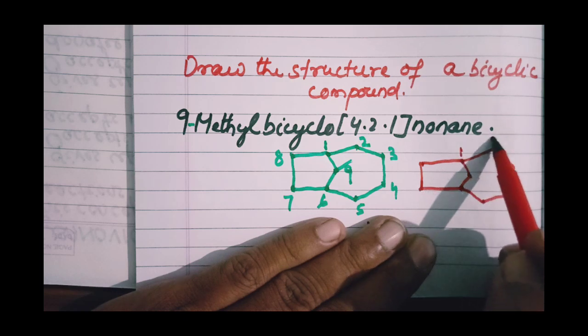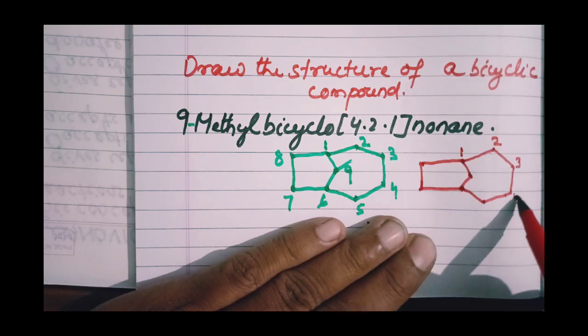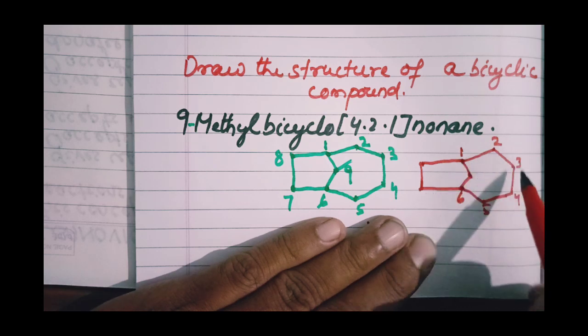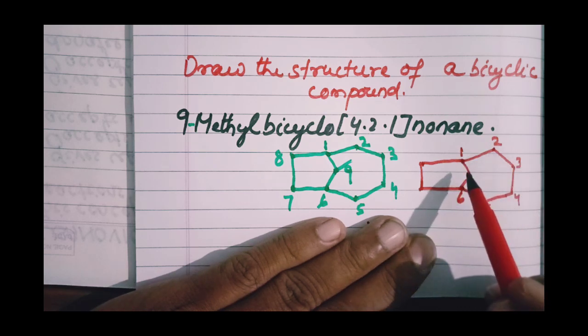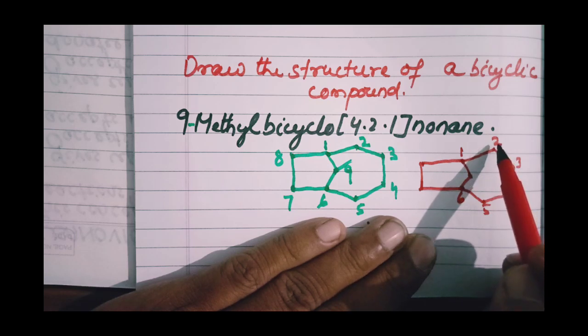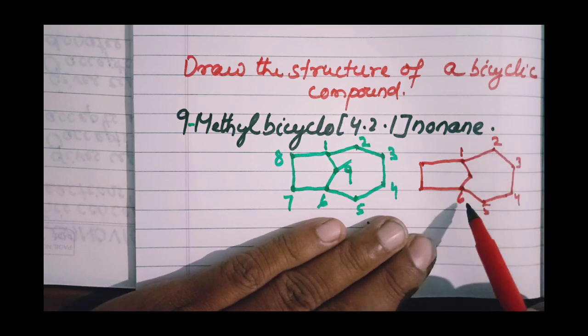Or you can say next to the bridgehead carbon, two is given to the carbon of the bigger ring: three, four, five, six, then seven, eight.